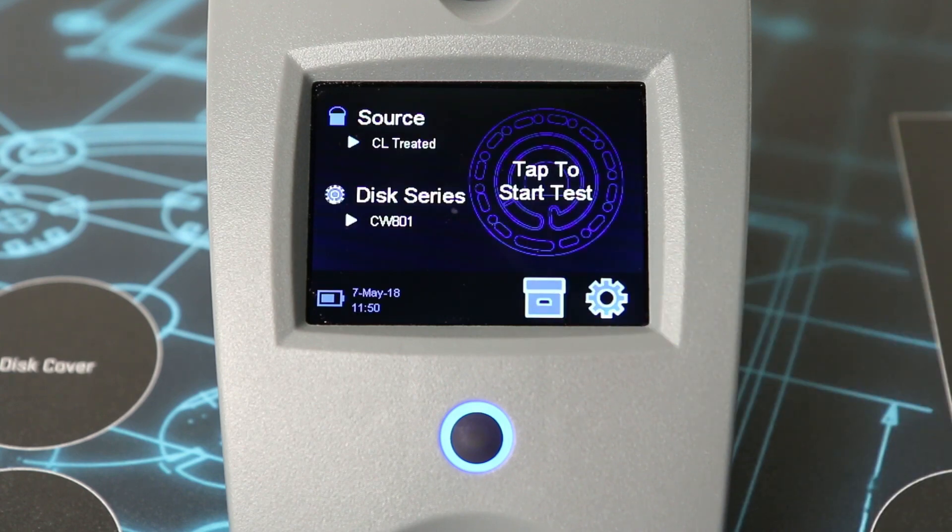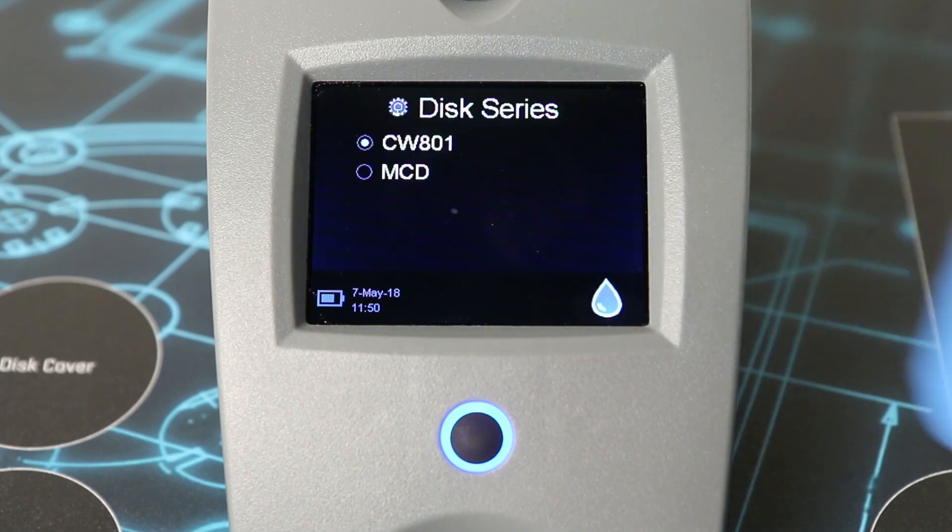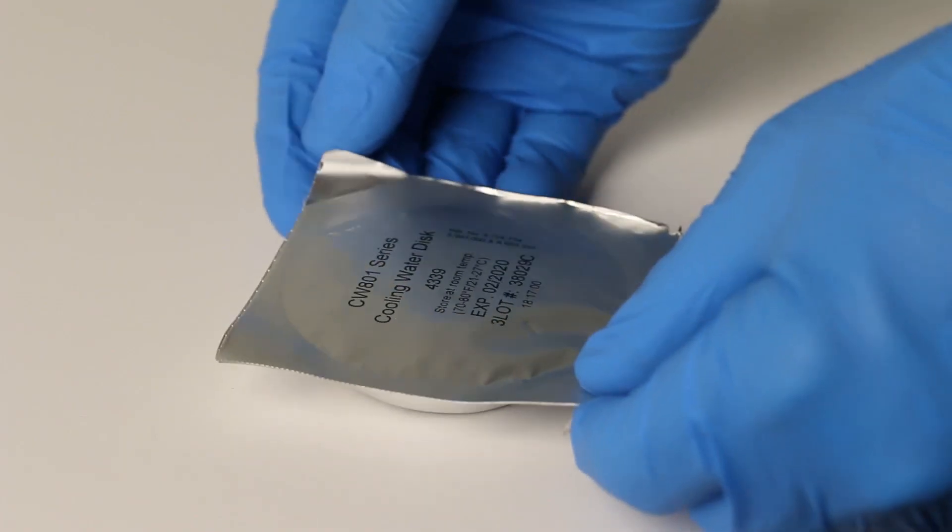Tap the disk icon and select a disk series, found on the disk packaging. Tap the drop icon to confirm. Note, the disk series are limited by water source type selection.